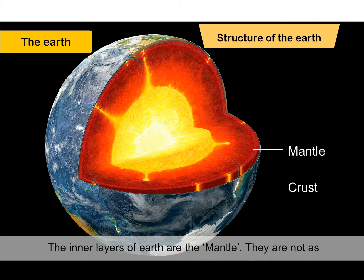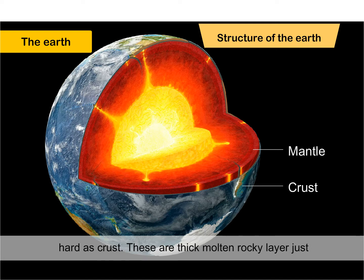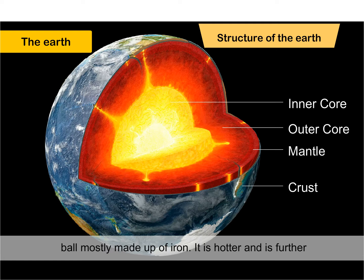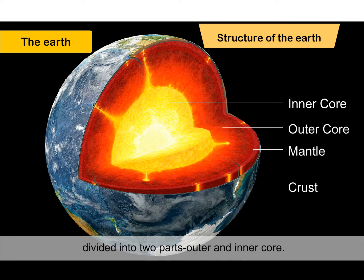The inner layers of Earth are the mantle. They are not as hard as crust. These are thick, molten, rocky layers just below the crust. The innermost layer is core. It is a solid ball, mostly made up of iron. It is hotter and is further divided into two parts: outer and inner core.